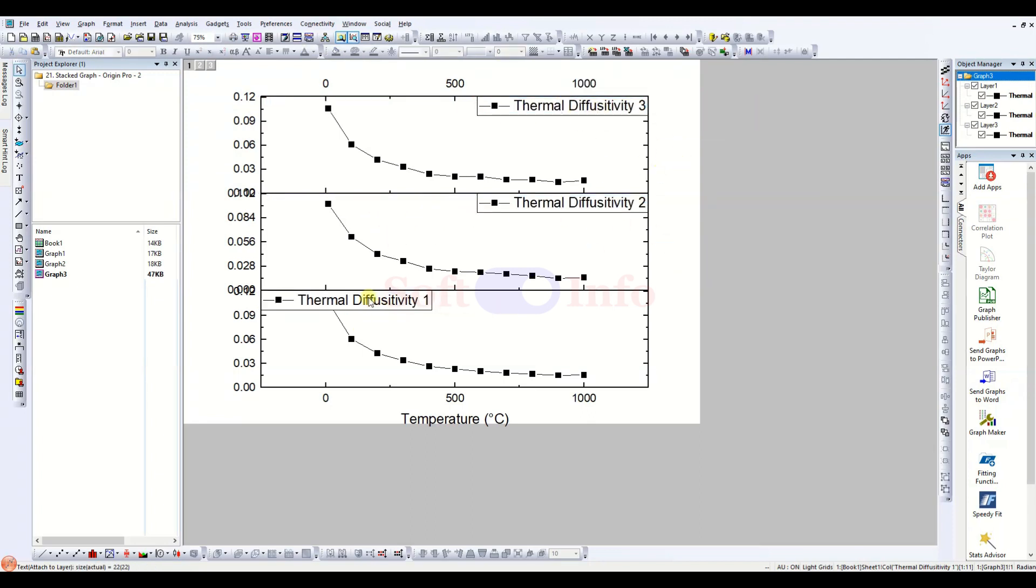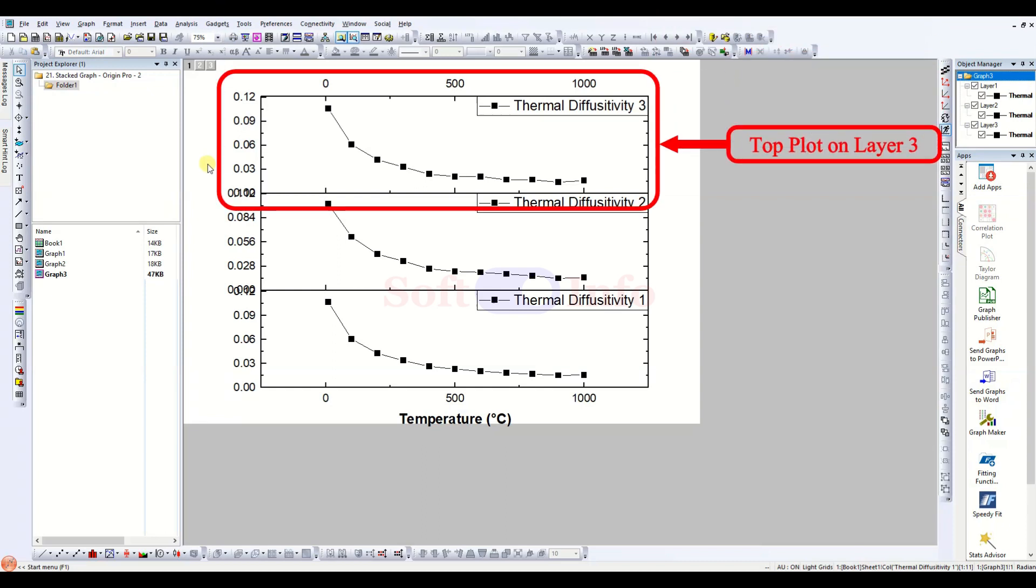We are adjusting the format of the x-axis labels. Keep in mind that each plot is drawn on a separate layer. For instance, if we have three plots, they are placed on three separate layers with the top plot on layer 3, the middle one on layer 2, and the bottom plot on layer 1.